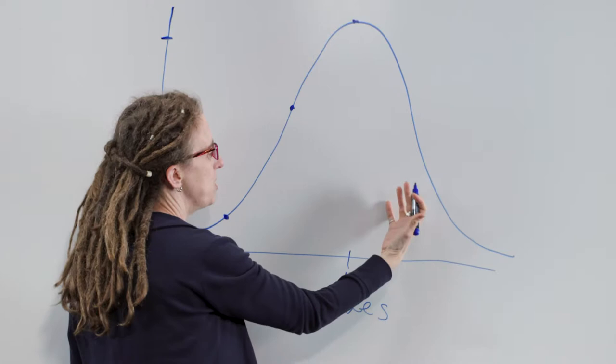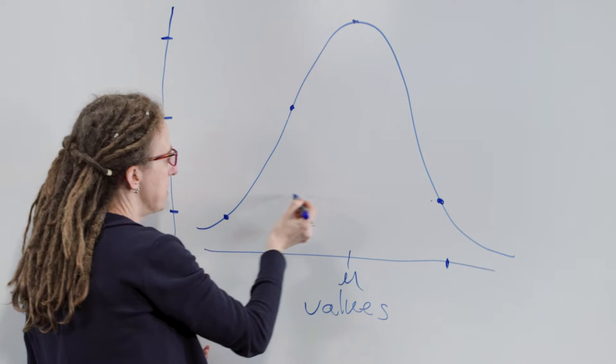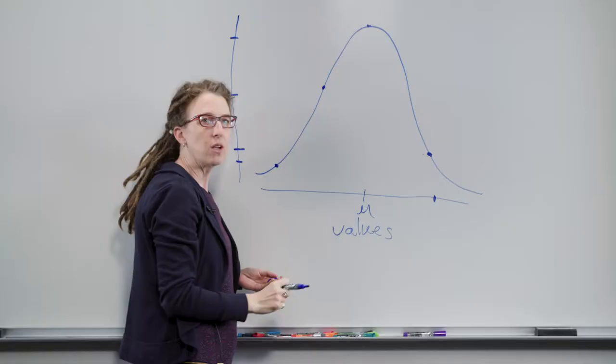This distribution is symmetric, meaning that this side is a mirror image of this side. So likewise, as we move away from the mean and get higher and higher, we get values here that are certainly possible, but they are less likely than the mean to occur.